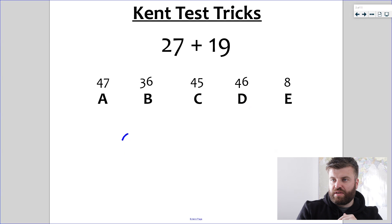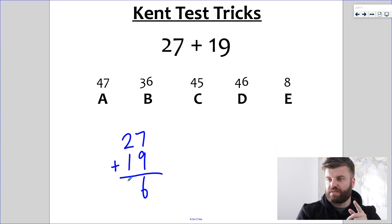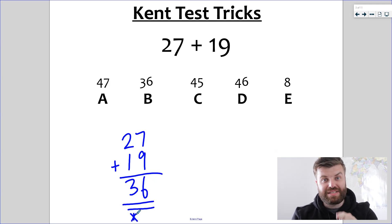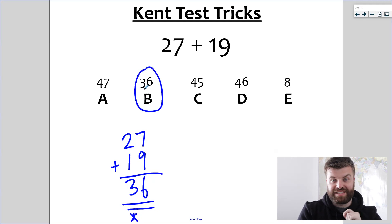If I did 27 plus 19, and I laid it out in the column method, and I did 7 plus 9 is 16, and 2 plus 1 is 3, and I put 36. That's the wrong answer. I didn't exchange over my 10 at the bottom. But the Kent Test knows that this is a mistake you might make. So look at option B, 36.